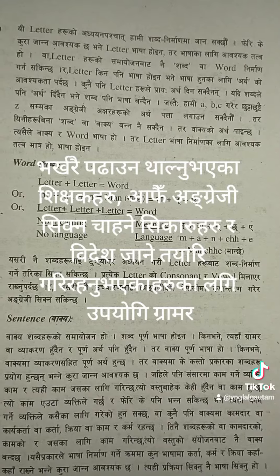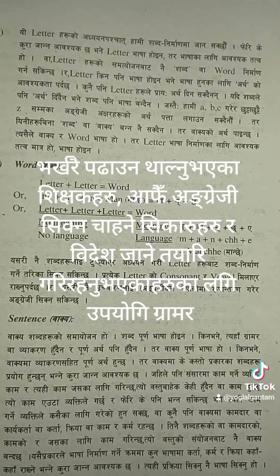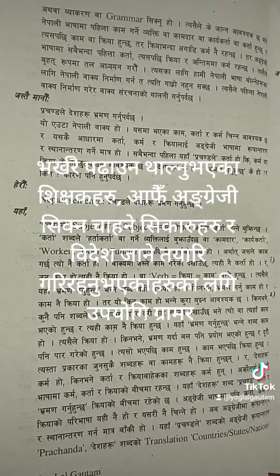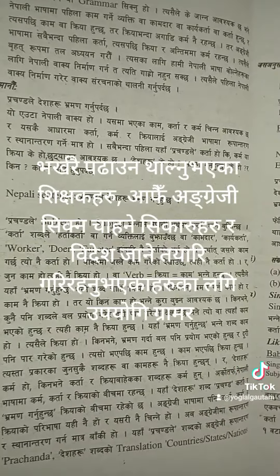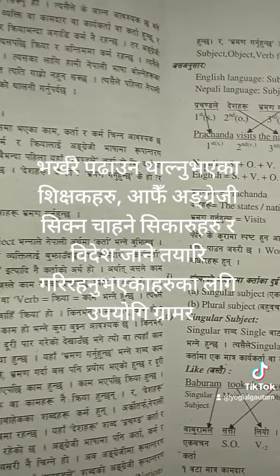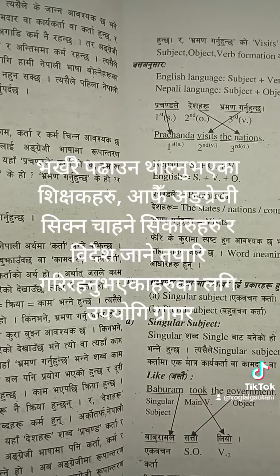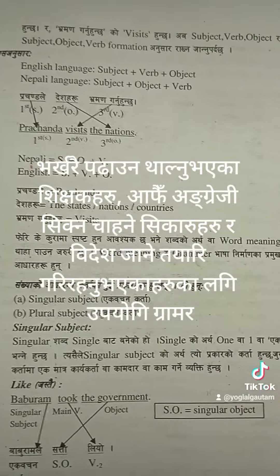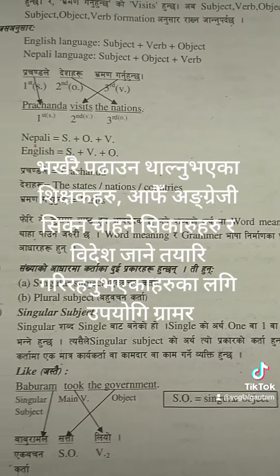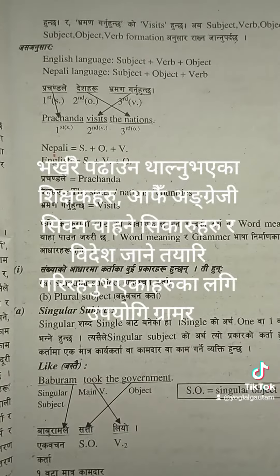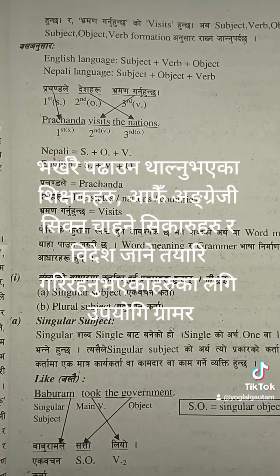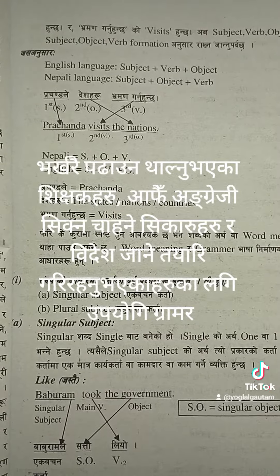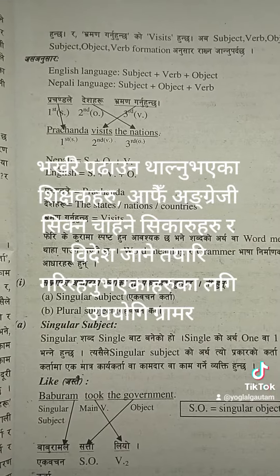The contact number for Satya Shakti Pustakbhandar is 9849272833. The next distributor is Mahalakshmi Books, Kirtipur, Kathmandu. The contact number for this stationary is 9841689062.